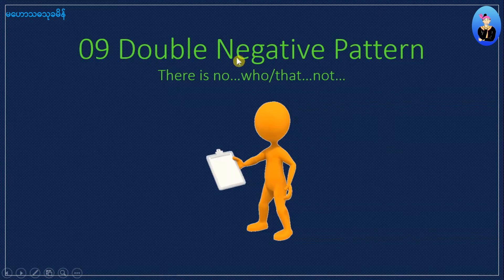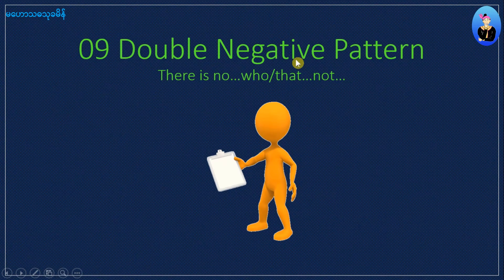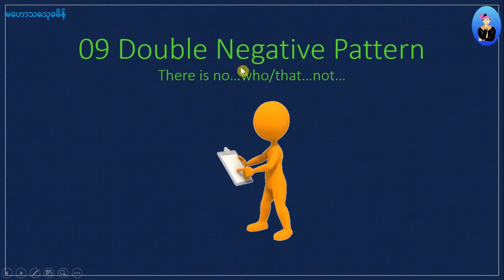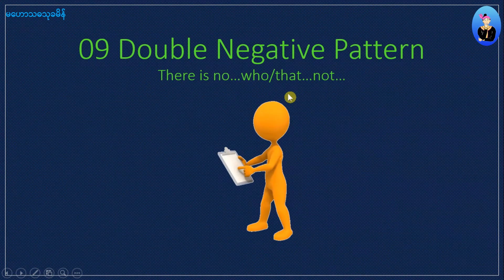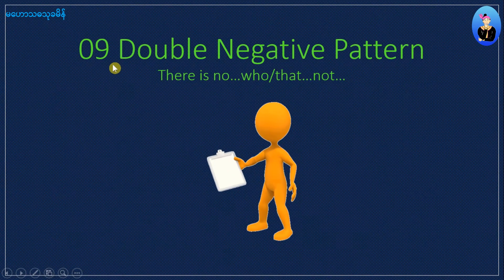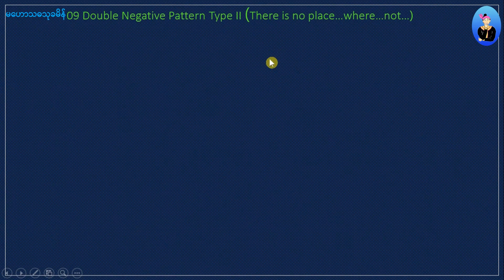Double negative pattern. Double is not. Negative pattern is not. Part 9: a double negative pattern, type 2.